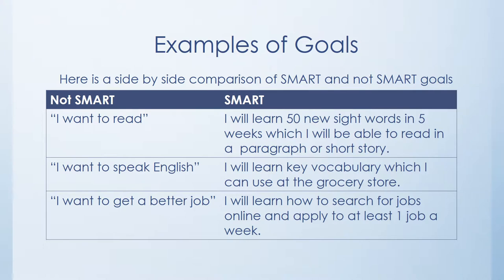Let's look at some examples of goals. On the left side we have our not-SMART goals, and on the right we have our SMART goals, so we can see how they compare and contrast. The first says 'I want to read.' If we apply SMART goal principles, it might look more like: 'I will learn 50 new sight words in five weeks, which I will be able to read in a paragraph or short story.' The next one is 'I want to speak English.' The SMART version is: 'I will learn key vocabulary which I can use at the grocery store.' And the last one, 'I want to get a better job' becomes 'I will learn how to search for jobs online and apply to at least one job a week.' As we can see, the SMART goals are specific, measurable by virtue of the outcomes they produce, and if we applied a timetable, they would be time bound.